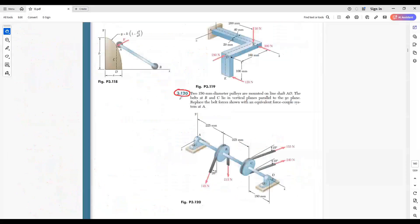Problem 3.120. Two 150-millimeter diameter pulleys are mounted on line shaft AD. The belts at B and C lie in vertical planes parallel to the YZ plane. Replace the belt forces shown in this figure with an equivalent force-couple system at A.